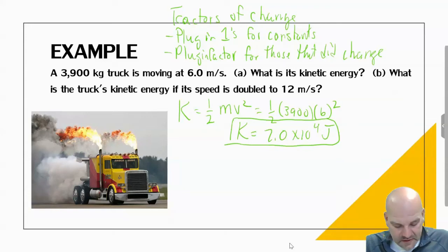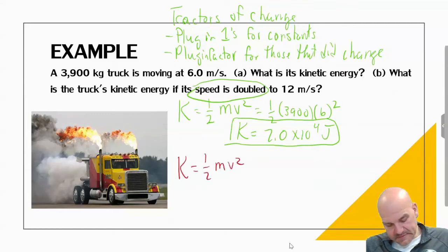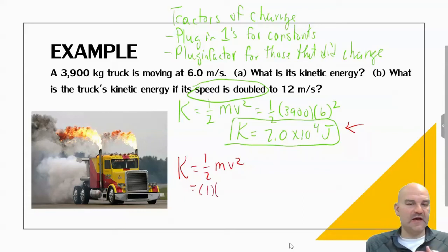So what did we do to our speed? Well, we doubled the speed. So I'm going to start my equation. I know this is my original, so whatever I get for this factor, I'm going to multiply it by my original. One half stays the same, that's always a constant. The mass of the truck stays the same, it's still going to be 3,900 kilograms.